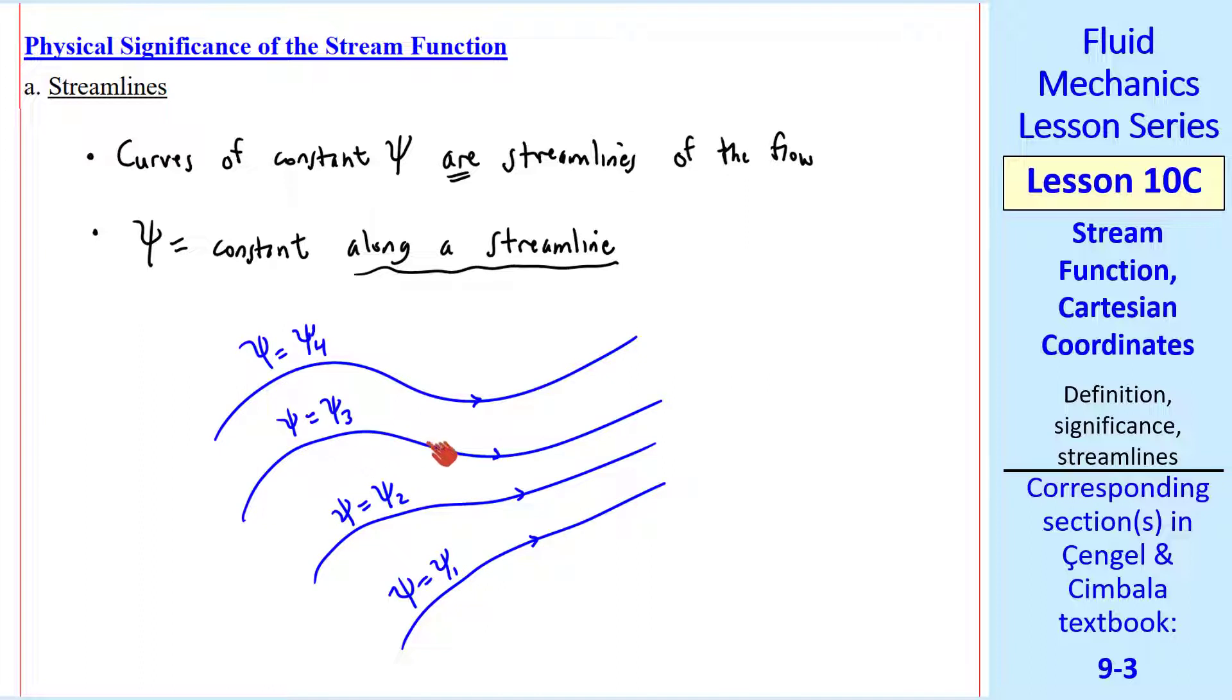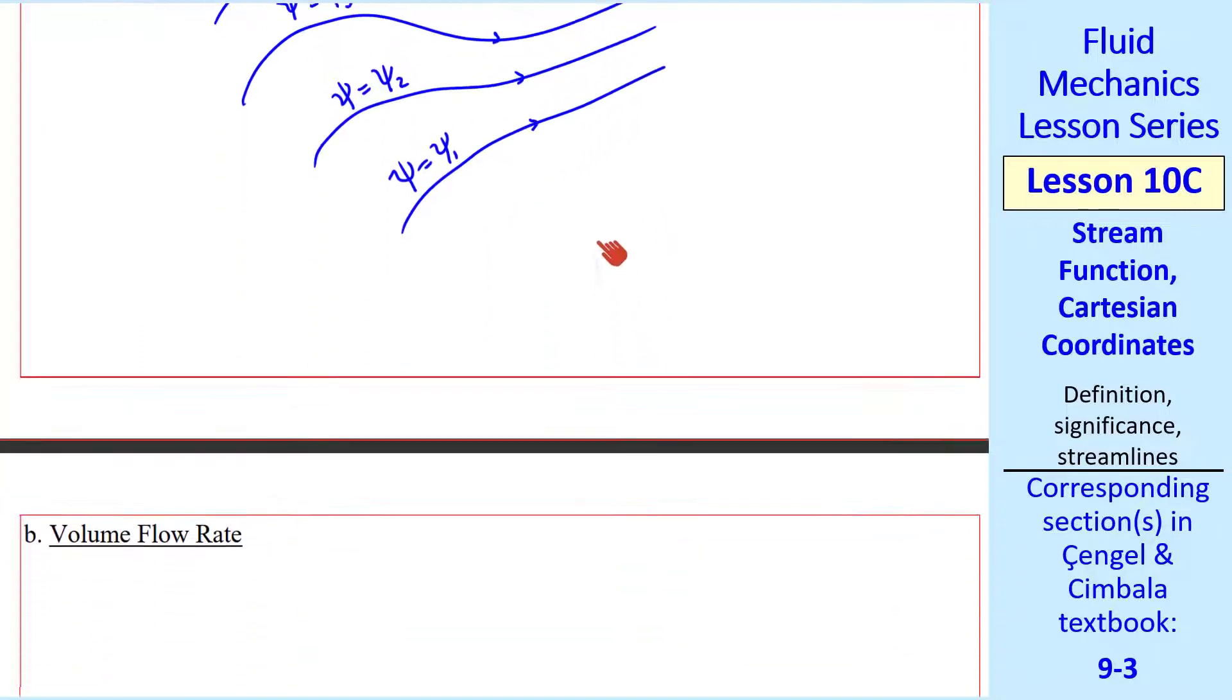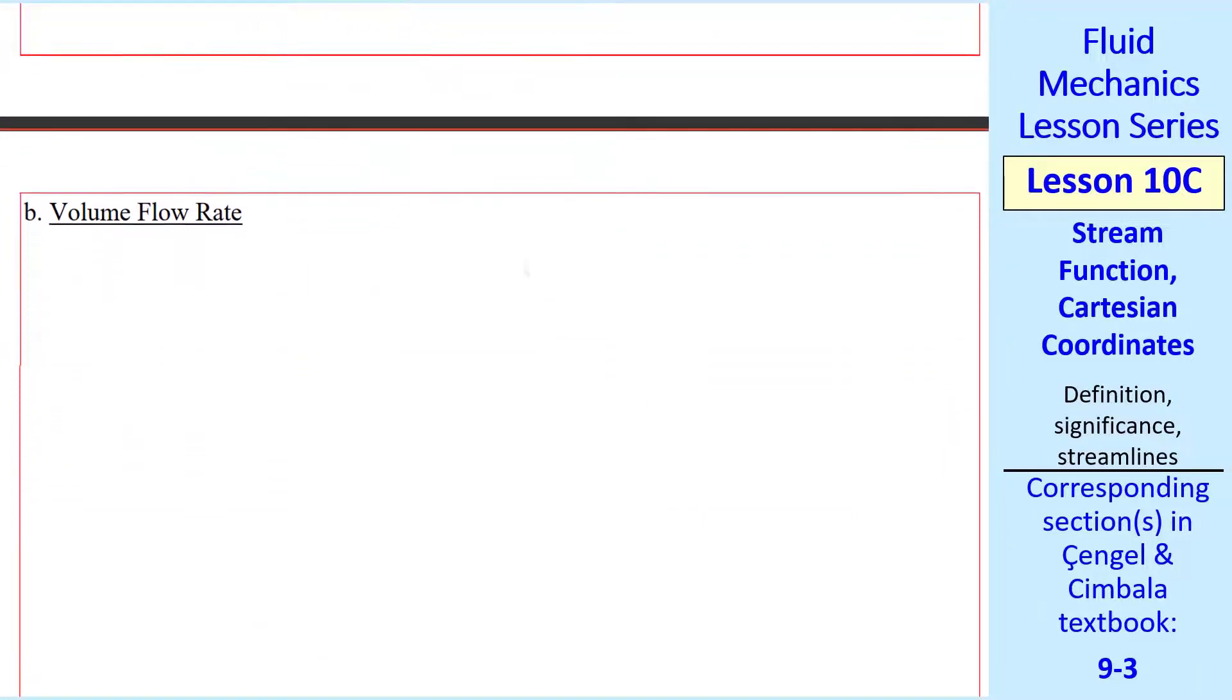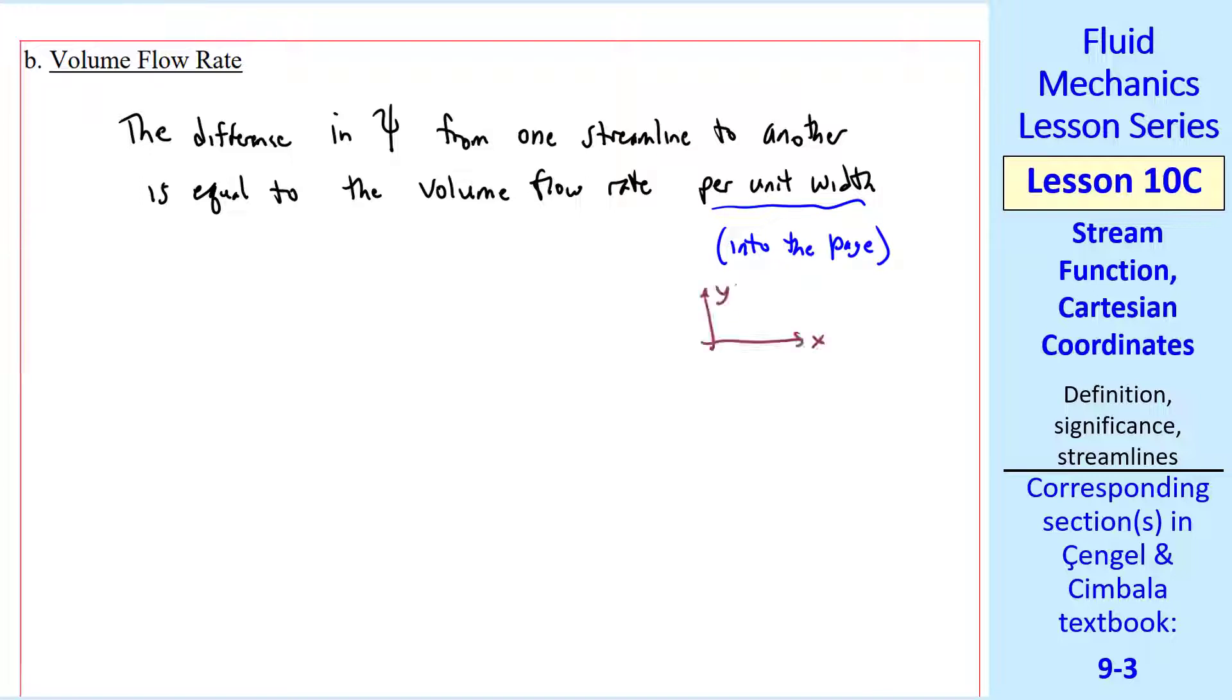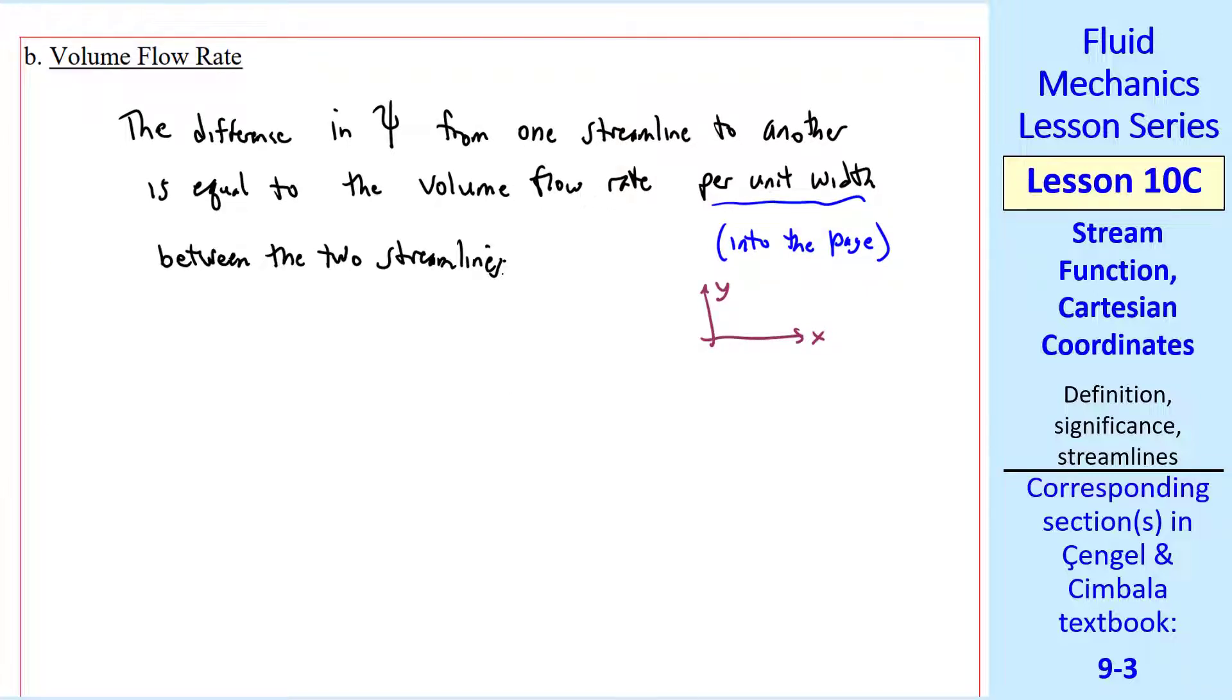And everywhere along one of these streamlines, psi is a unique constant. We can also see the significance of psi by looking at volume flow rate. It turns out that the difference in psi from one streamline to another is equal to the volume flow rate per unit width, and we mean into the page, or out of the page. In other words, in the z direction, since our x-y coordinate system is in the plane.